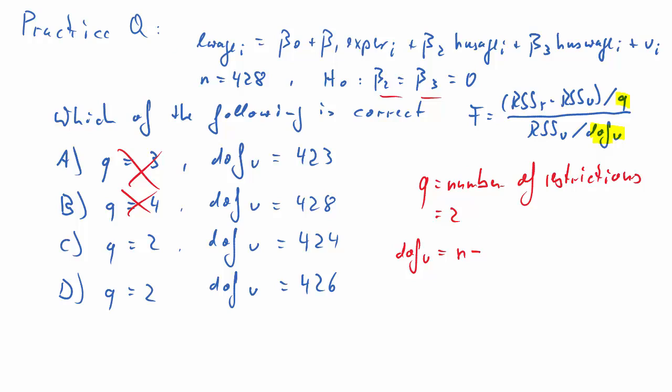The degrees of freedom for the unrestricted model is n minus the number of estimated coefficients. Here we have 4, so it's n minus 4, altogether 424. Therefore, there's only one correct solution, and that is solution C.